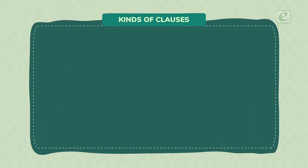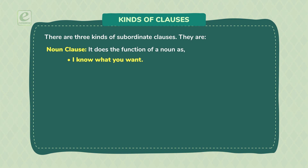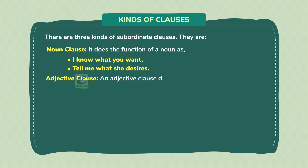Kinds of clauses. There are three kinds of subordinate clauses. They are: noun clause — it does the function of a noun, as in 'I know what you want' and 'Tell me what she desires.' Adjective clause — an adjective clause does the work of an adjective.